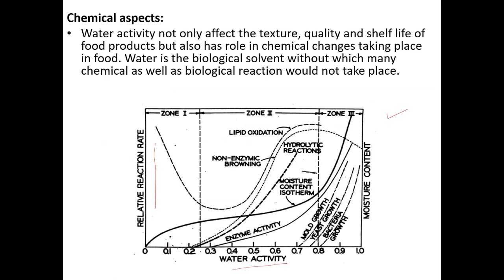At a water activity of 0.1, only one change is seen — moisture-related (zone 1). But between water activity 0.7 to 1, you see mold growth, yeast growth, bacterial growth, and enzyme activity increasing. Also occurring are hydrolytic reactions, non-enzymatic browning, and lipid oxidation. There are many chemical reactions taking place simultaneously across the water activity spectrum.